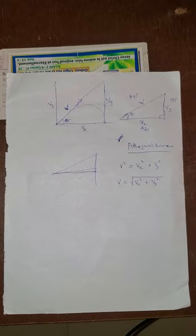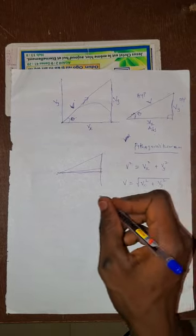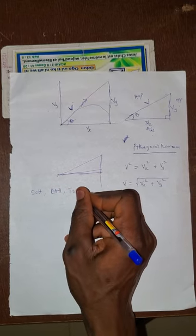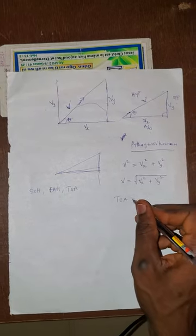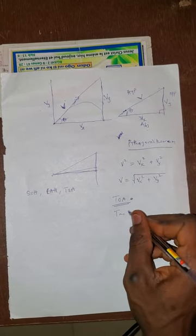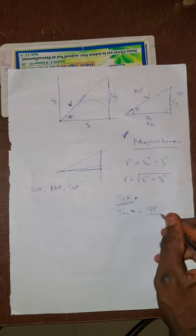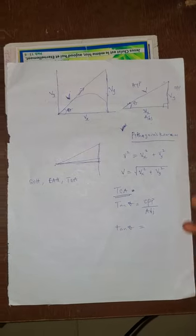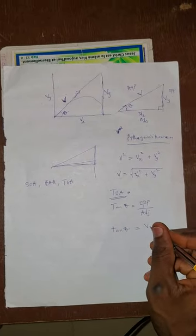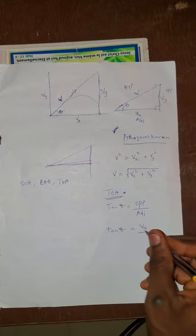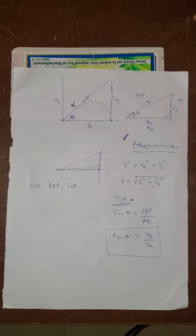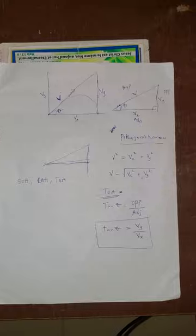Using SOHCAHTOA, where theta is the angle, the opposite is Vy and the adjacent is Vx. Therefore tan θ = Vy / Vx. Take note of this formula. Now let's get into the calculation aspect of this topic.